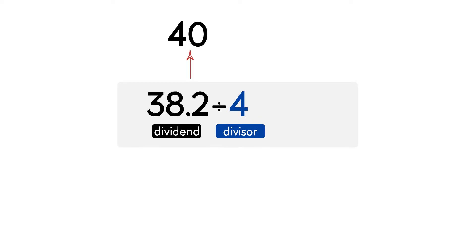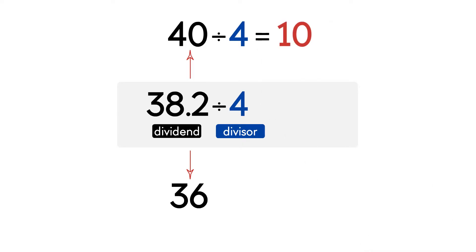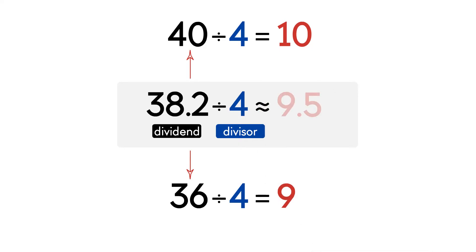We can also choose a compatible number less than the dividend, so the quotient will be less than the actual quotient. The compatible number less than the whole number part of the dividend is 36. Now we divide the compatible numbers by 4, which is the divisor. 40 divided by 4 equals 10, so the actual quotient is smaller than 10. 36 divided by 4 equals 9, so the actual quotient is between 9 and 10 — it is about 9.5.